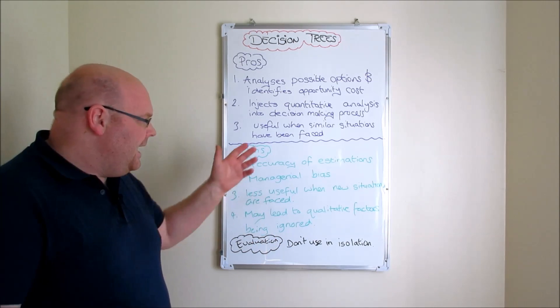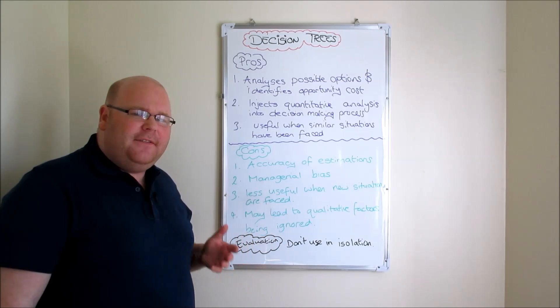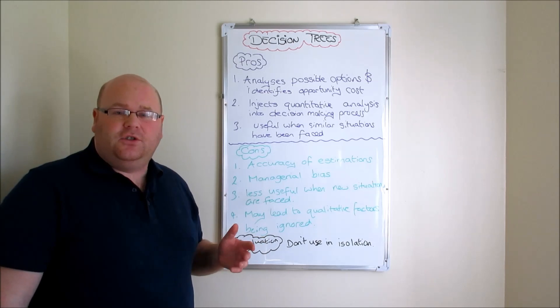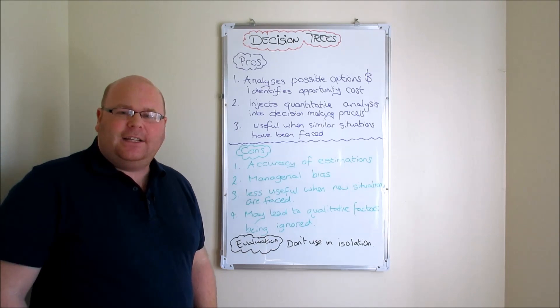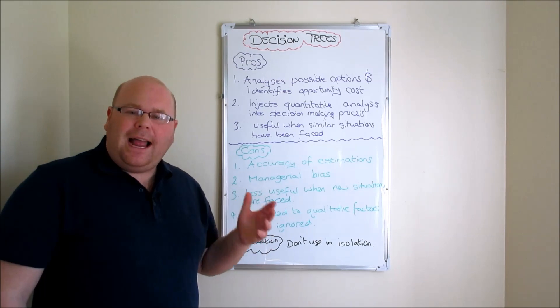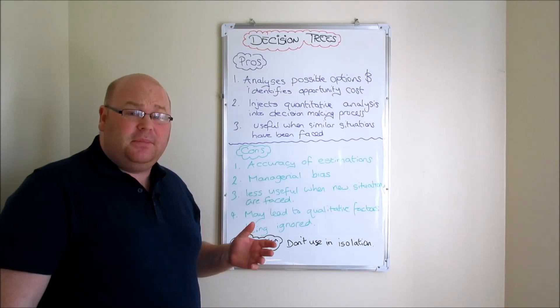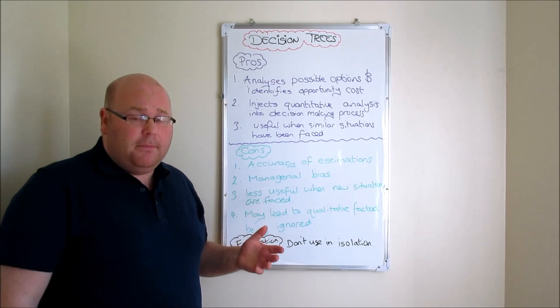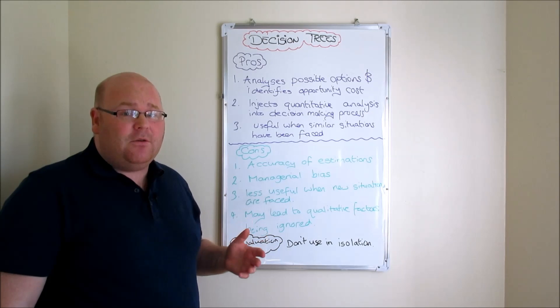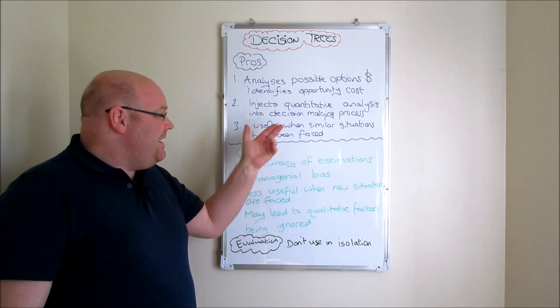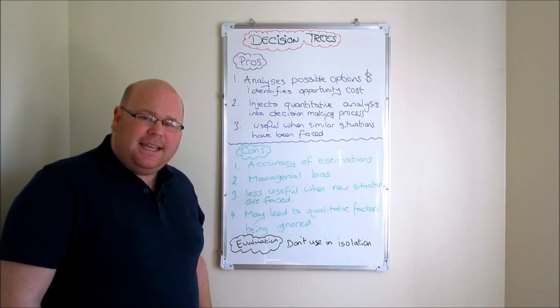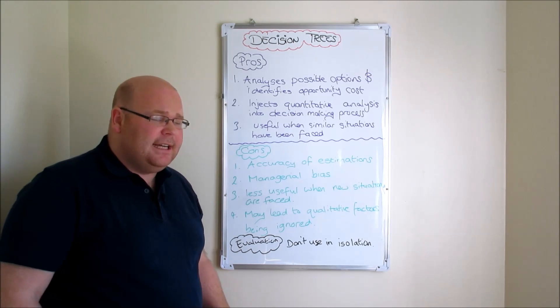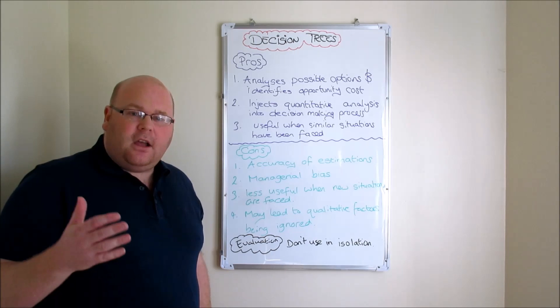If we balance that out with the kind of difficulties that firms might experience through the use of decision trees, top of that list has got to be: how accurate are the estimates going to be? In particular, how accurate are those probabilities going to be of different outcomes occurring? Even if the business is fortunate and it's making decisions that are similar to scenarios they may have faced in the past, we know that businesses are affected by the external environment and over time scenarios can change.